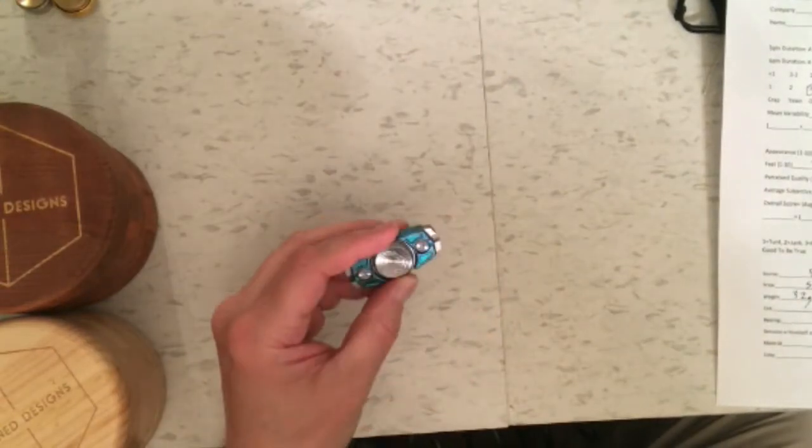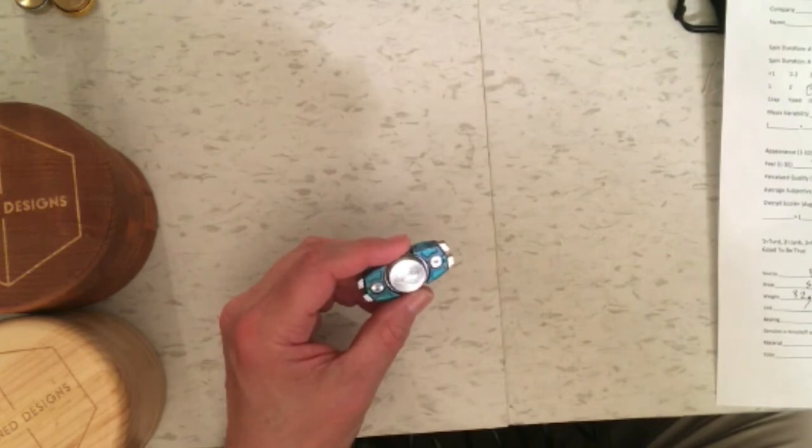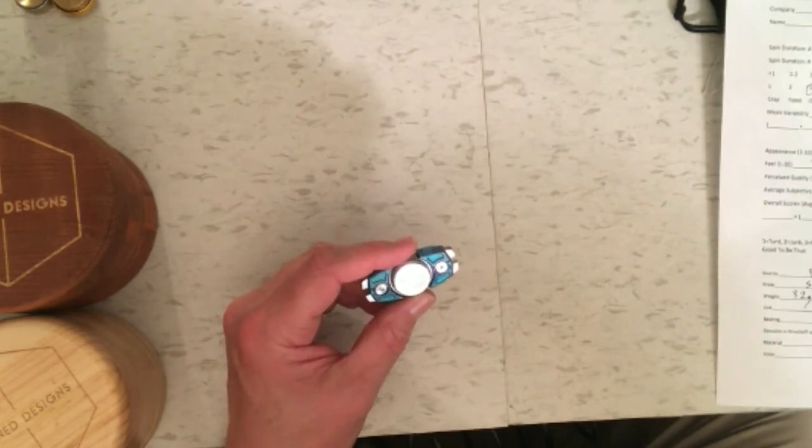Okay, the Stedemann Knives Z-07 turned out to be pretty much as I expected. It's not a long spinner at all. It only got an average spin duration of 2 minutes and 48 seconds.